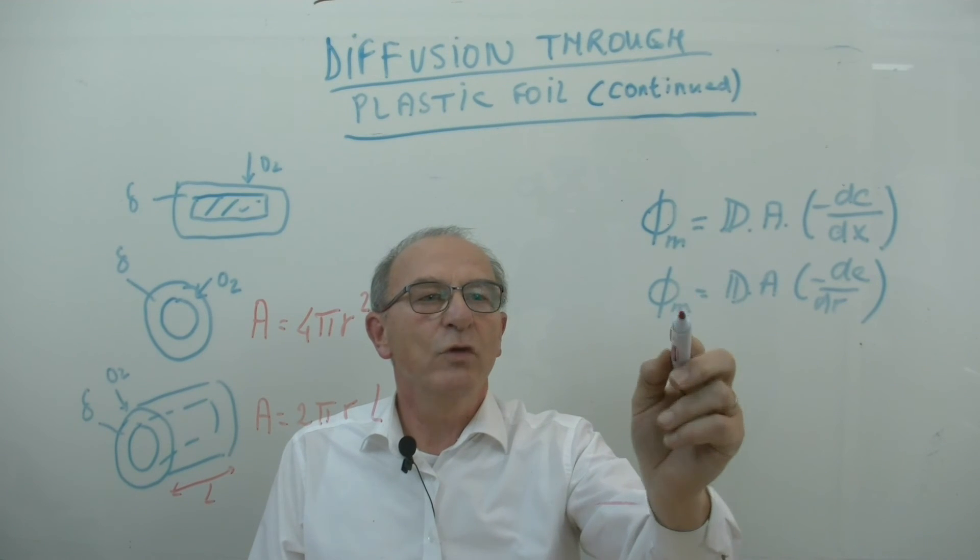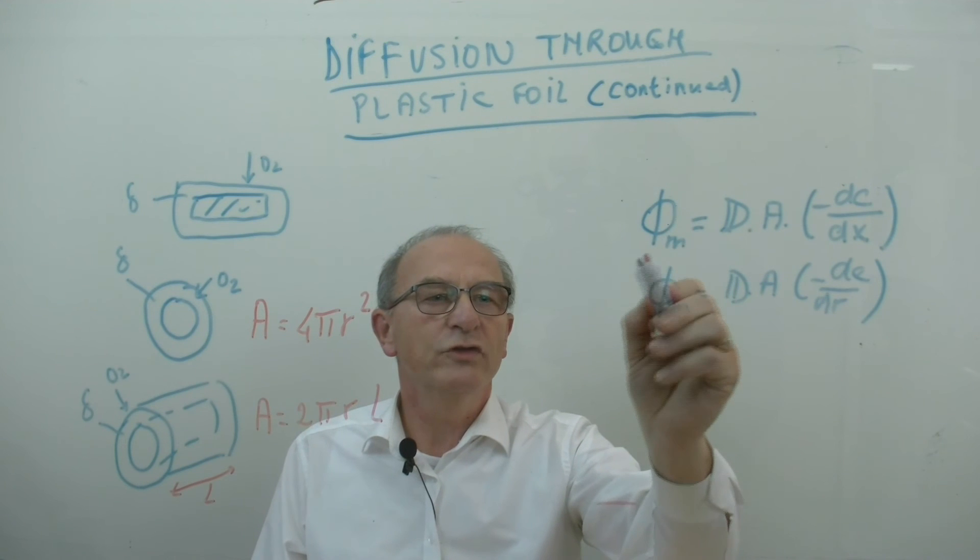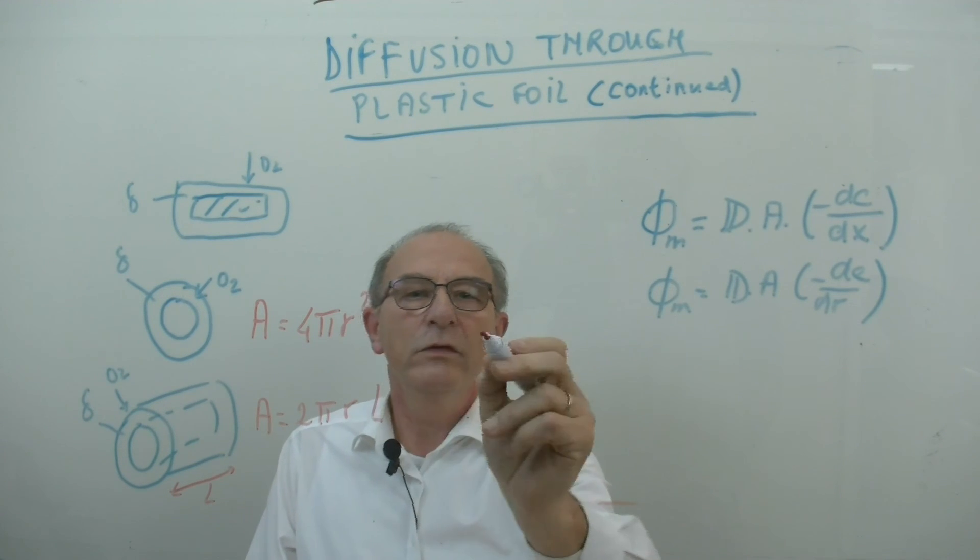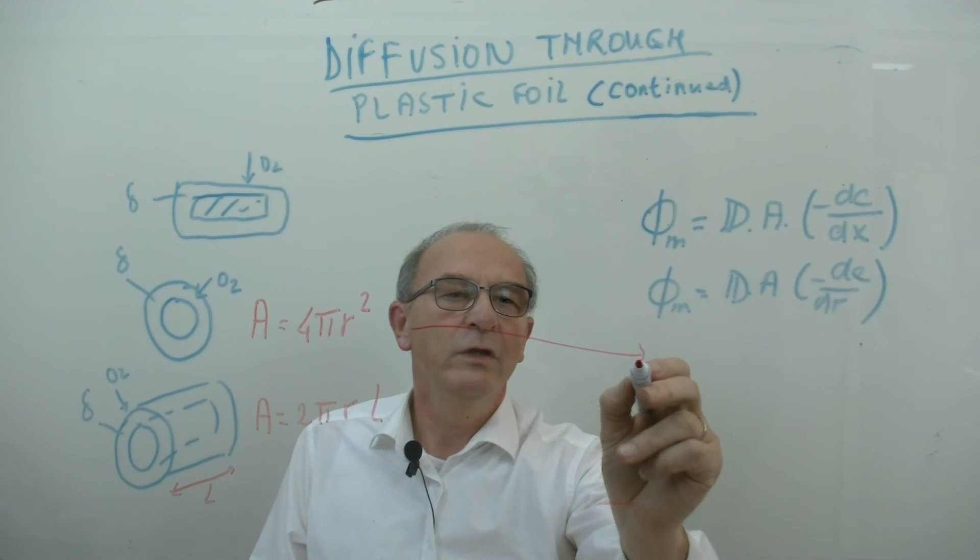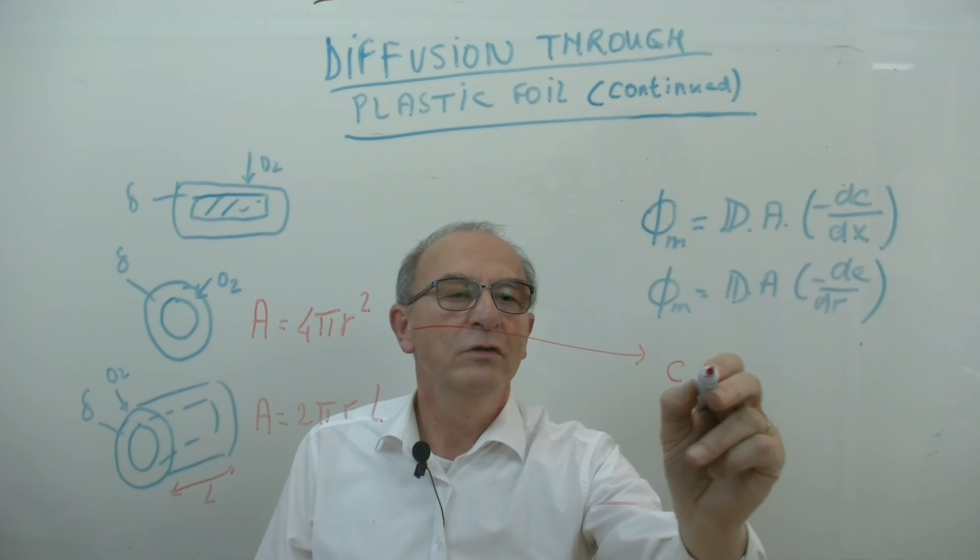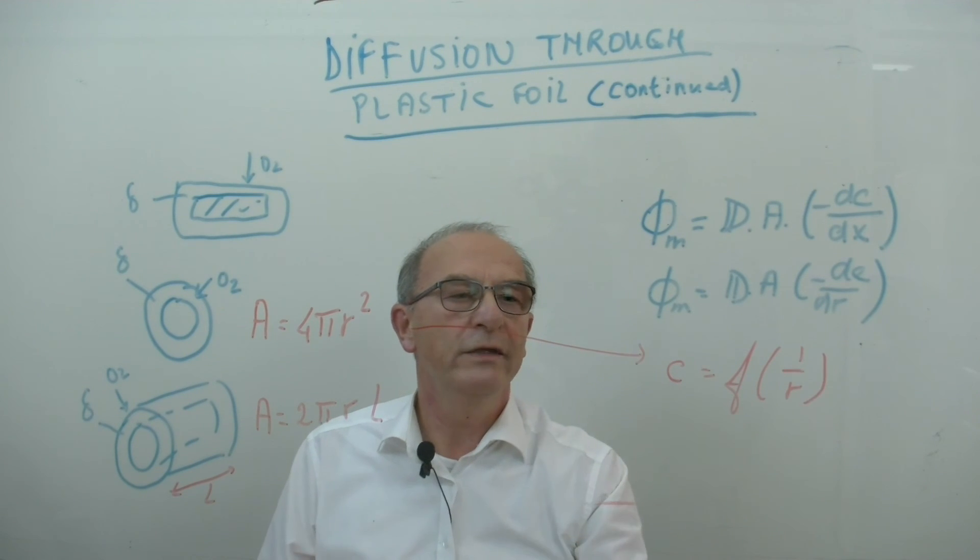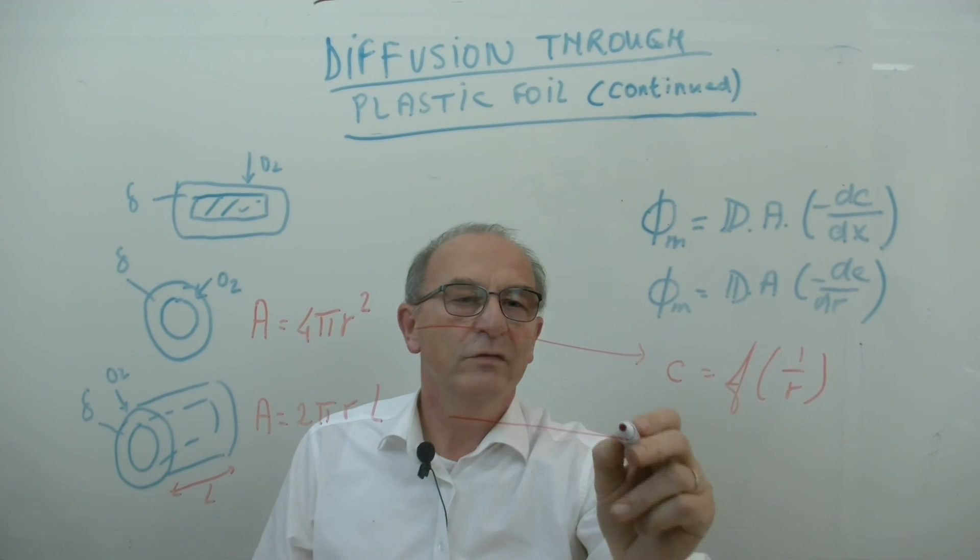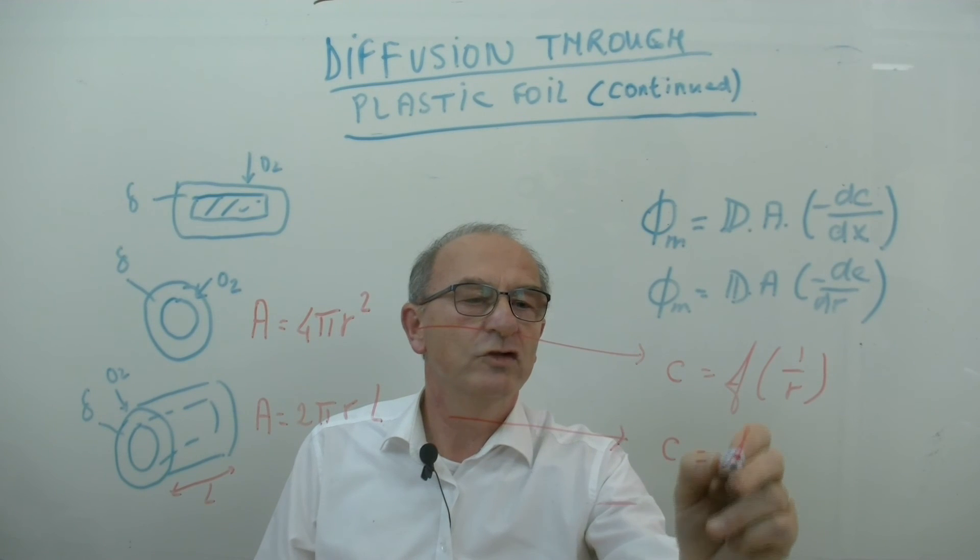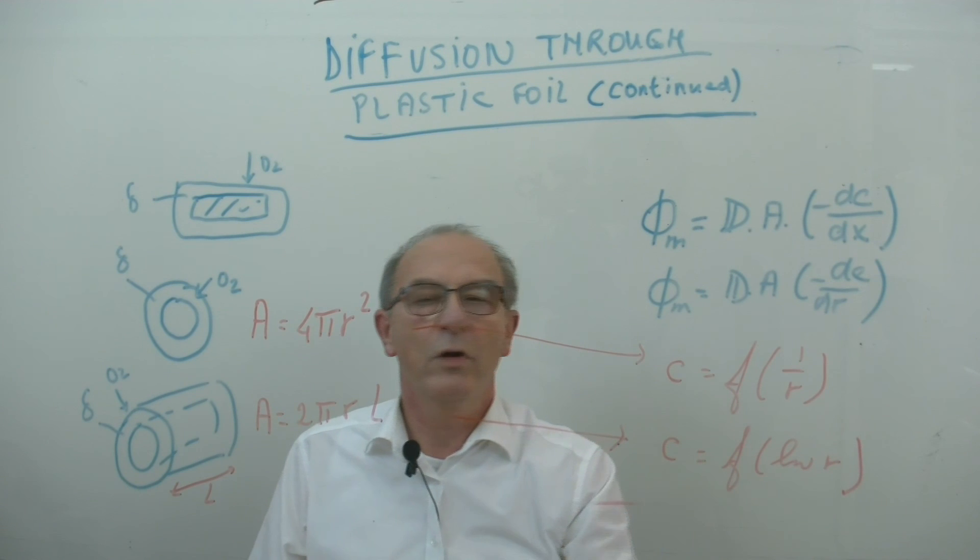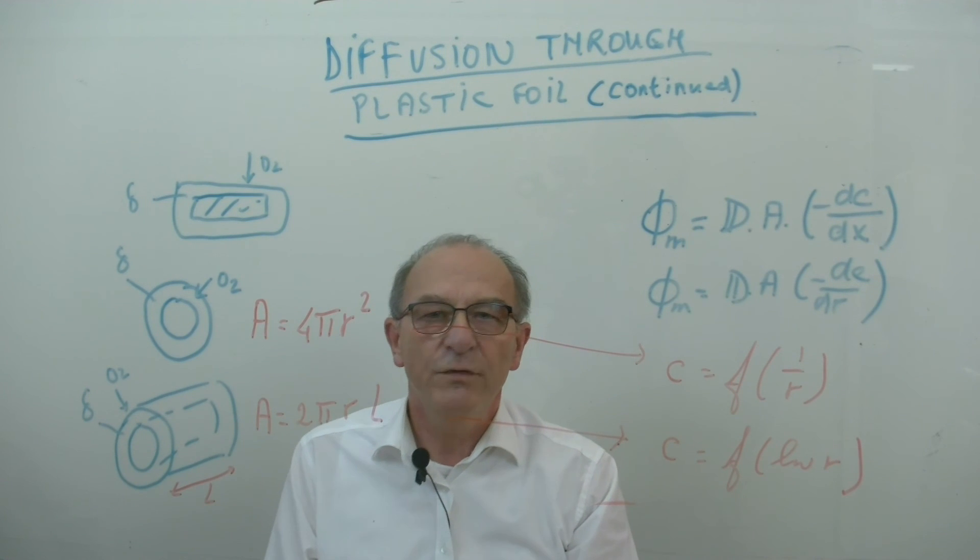So now we get different situations, and each time we have solved it by assuming that we have a constant mass flow rate. If you do this for the sphere, you get a concentration which is a function of 1 over R, over the radius. If you do this for the cylinder, you get a function which will be proportional to the natural logarithm of R. So you get different distributions.